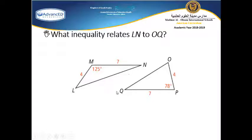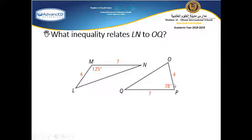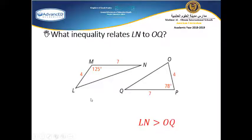What inequality relates LN to OQ? Since LN is opposite to the included angle between two congruent sides of lengths 6 and 7 in both triangles, the included angle here is 125° and the included angle here is 78°. The opposite side to 125° is bigger than the opposite side to 78°, so LN is bigger than OQ.